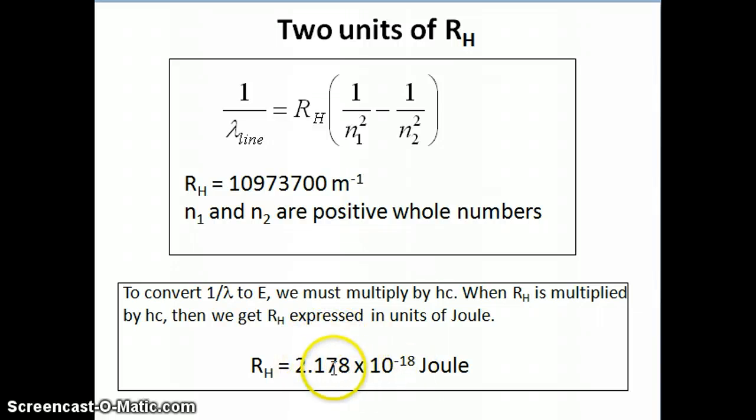The unit there will then be joules because now you've multiplied by Planck's constant times the speed of light, and that converts the unit to joule.